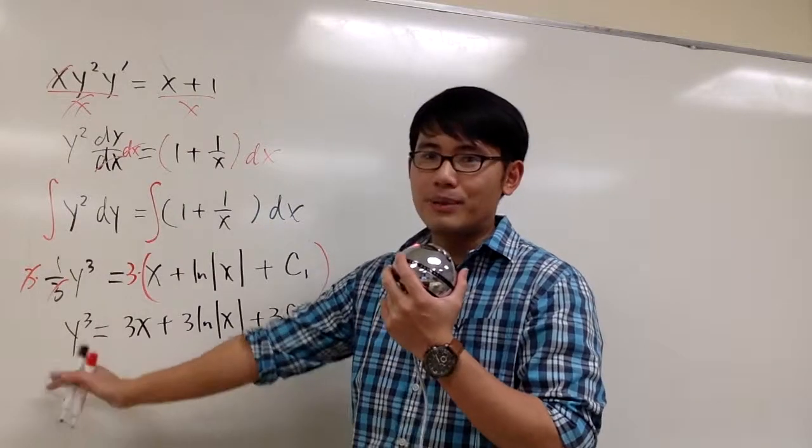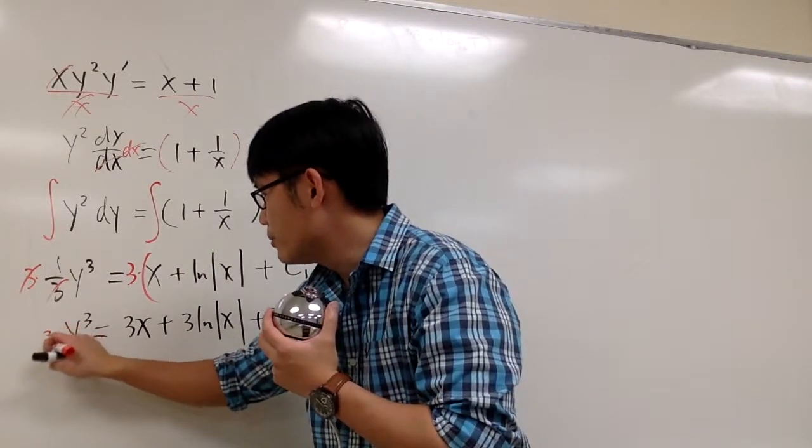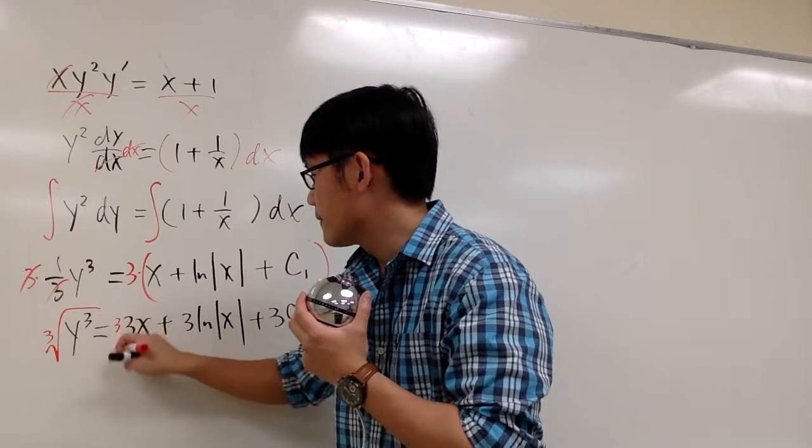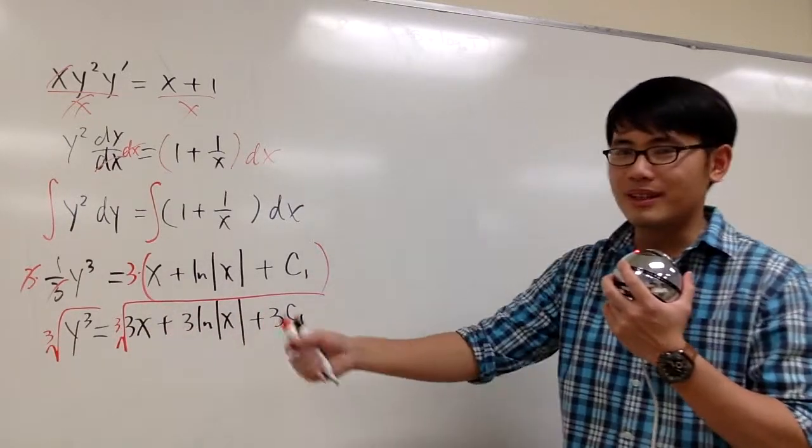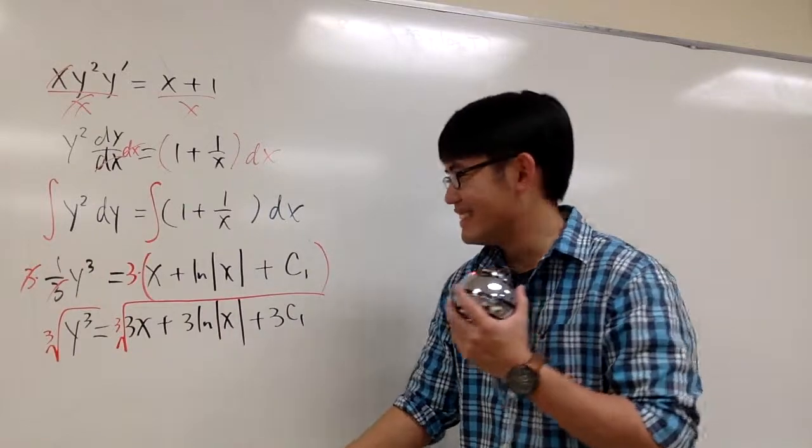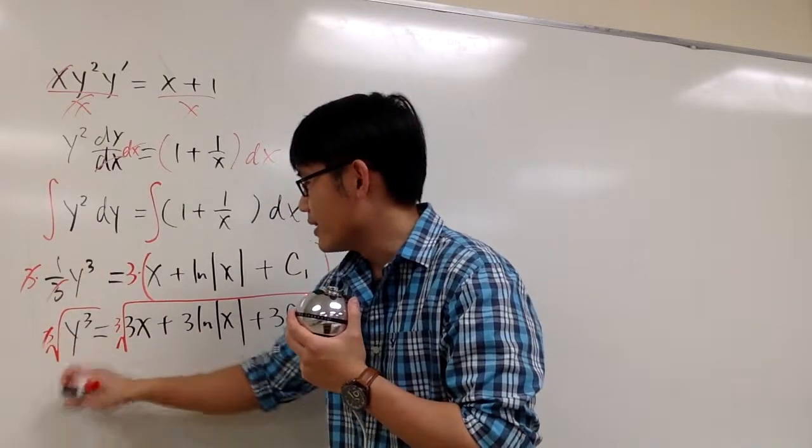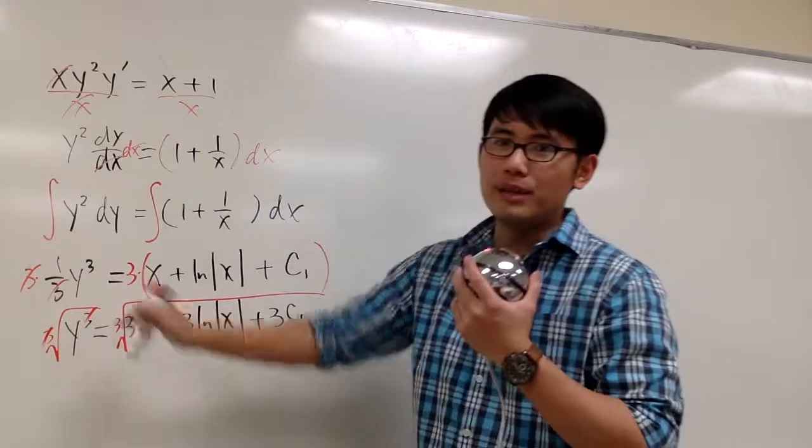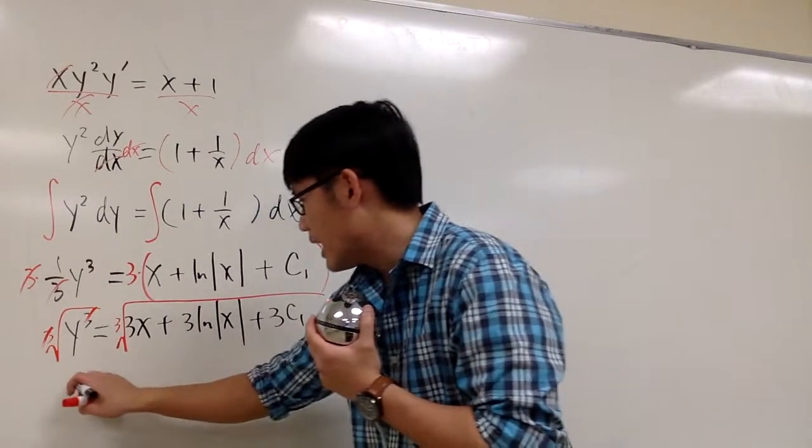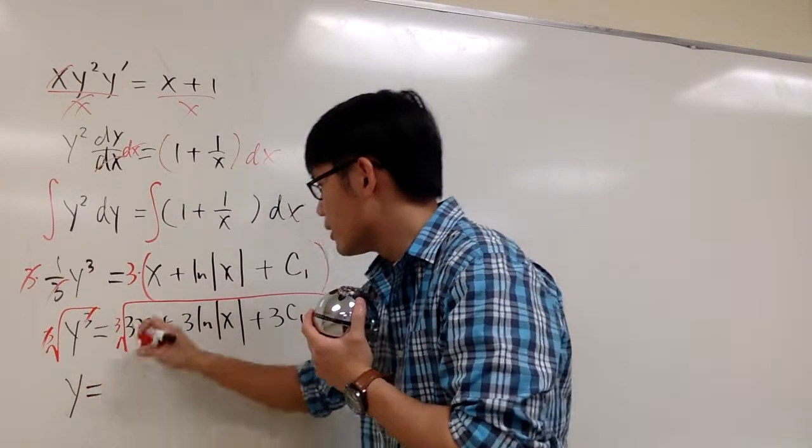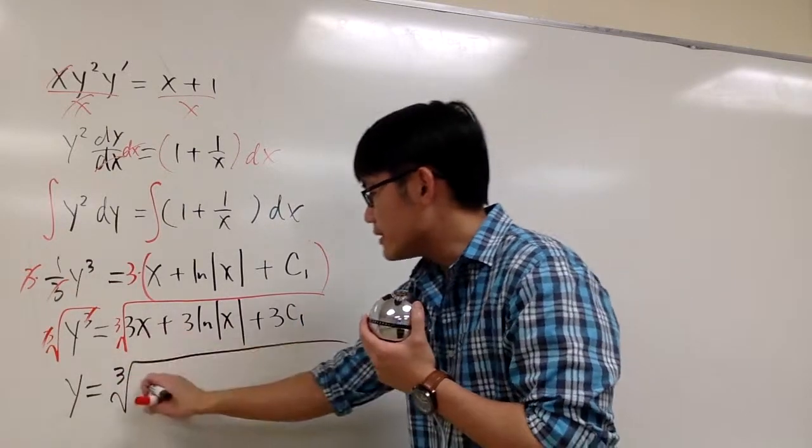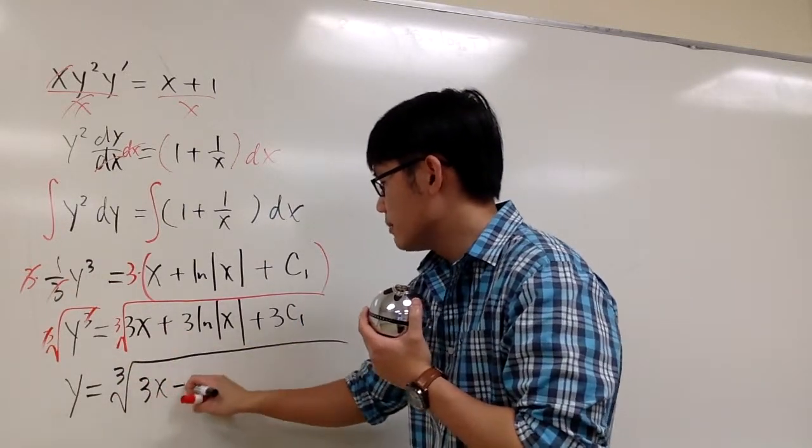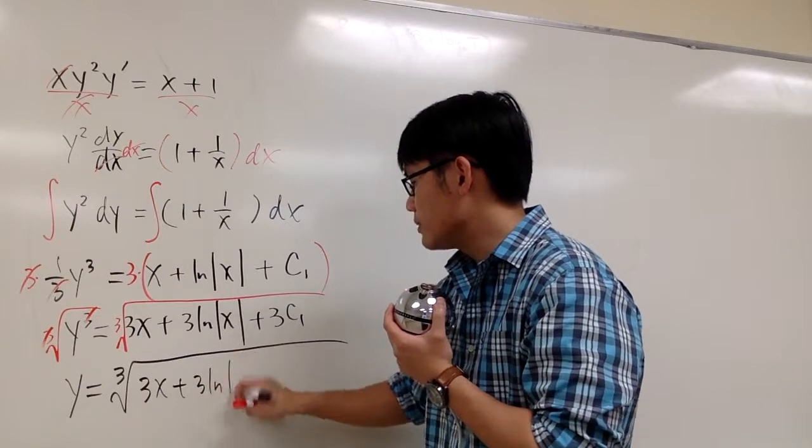One more step, I can actually get y by itself. We can take the cube root on both sides. And remember, do not put plus minus when you cube root both sides. So cube root on both sides, so that this and that cancels, and there's no plus minus. And we only have y equals to the cube root of, the inside is 3x plus 3 ln absolute value of x.